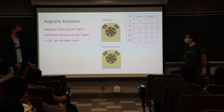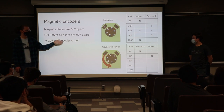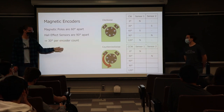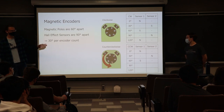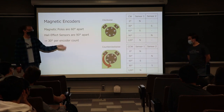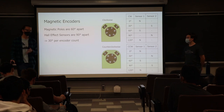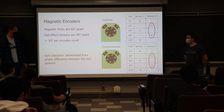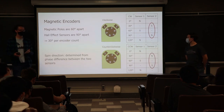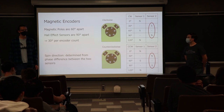The same logic applies counterclockwise, but the order of the north/south patterns is different. Starting at north: sensor two sees north, then sensor one sees south, then sensor two sees south, then sensor one sees north again. It's the same patterns but in a different sequence. This means we can actually tell which direction the motor has spun — critically important because knowing direction allows us to control the motor much more precisely.